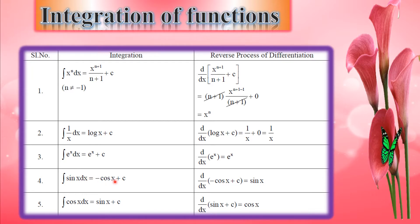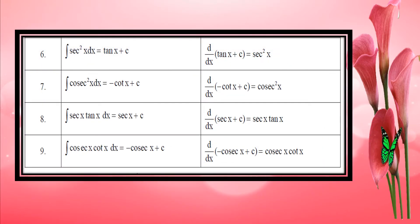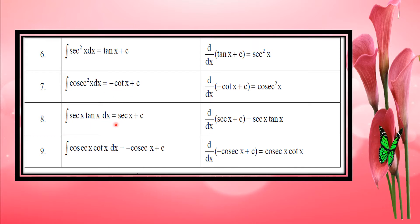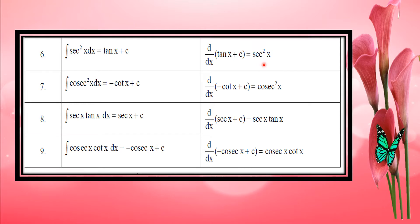Integral of sin x is equal to minus cos x. Integral of cos x is equal to sin x. Integral of sec squared x is equal to tan x. Integral of cosec squared x dx is equal to minus cot x. d by dx of tan x is equal to sec squared x, then integral of sec squared x is equal to tan x.